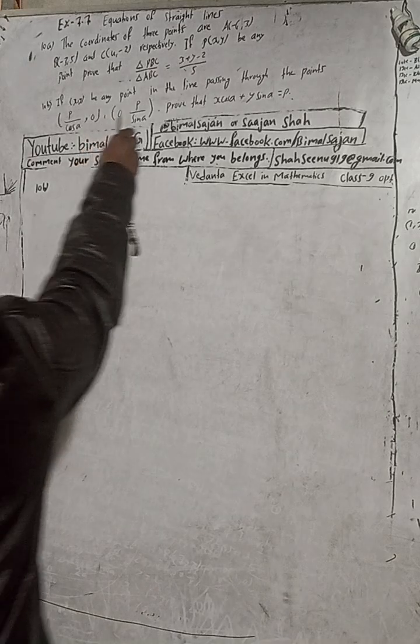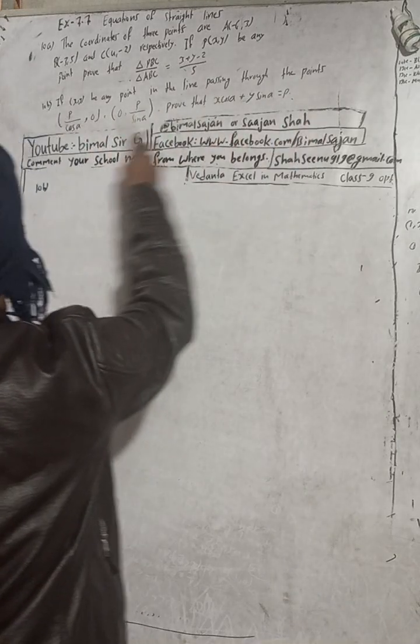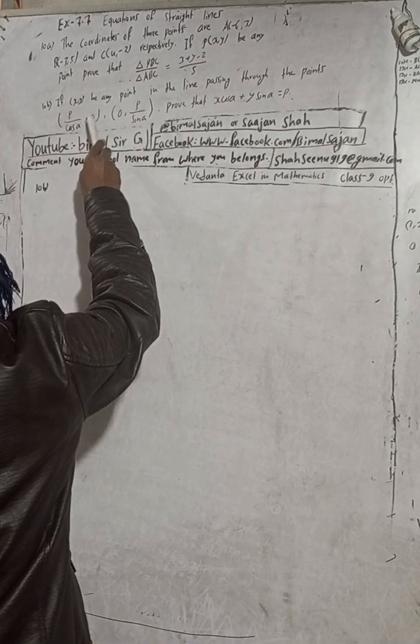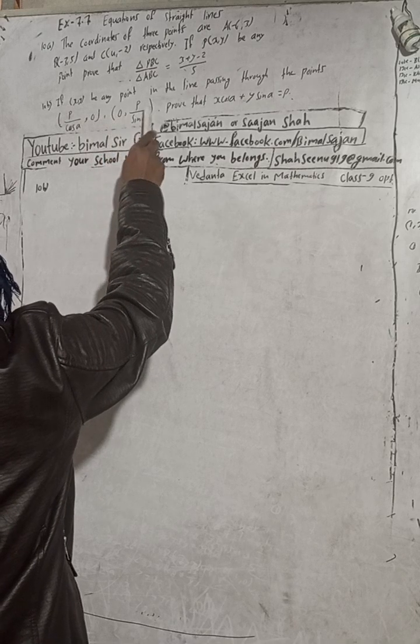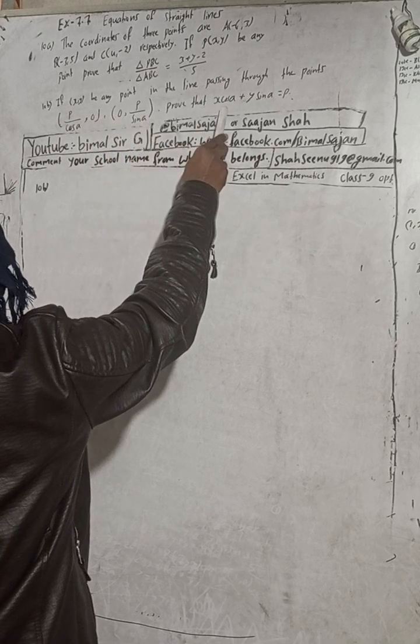Hi class 9 and 10 students, welcome back to Bimal Surgery YouTube channel. This is question number 10B, exercise 7.7 - equations of straight lines, class 9 optional mathematics. The question is: if (x, y) be any point in the line passing through the points P/cosα comma 0, and 0 comma P/sinα, prove that x·cosα + y·sinα = p.